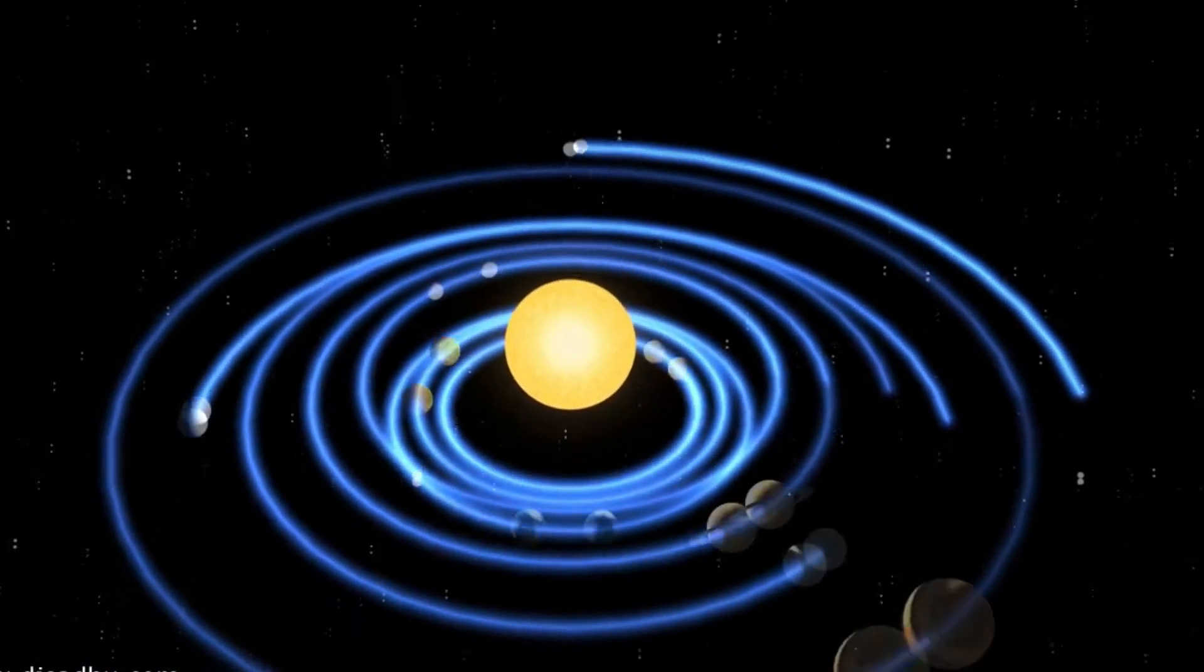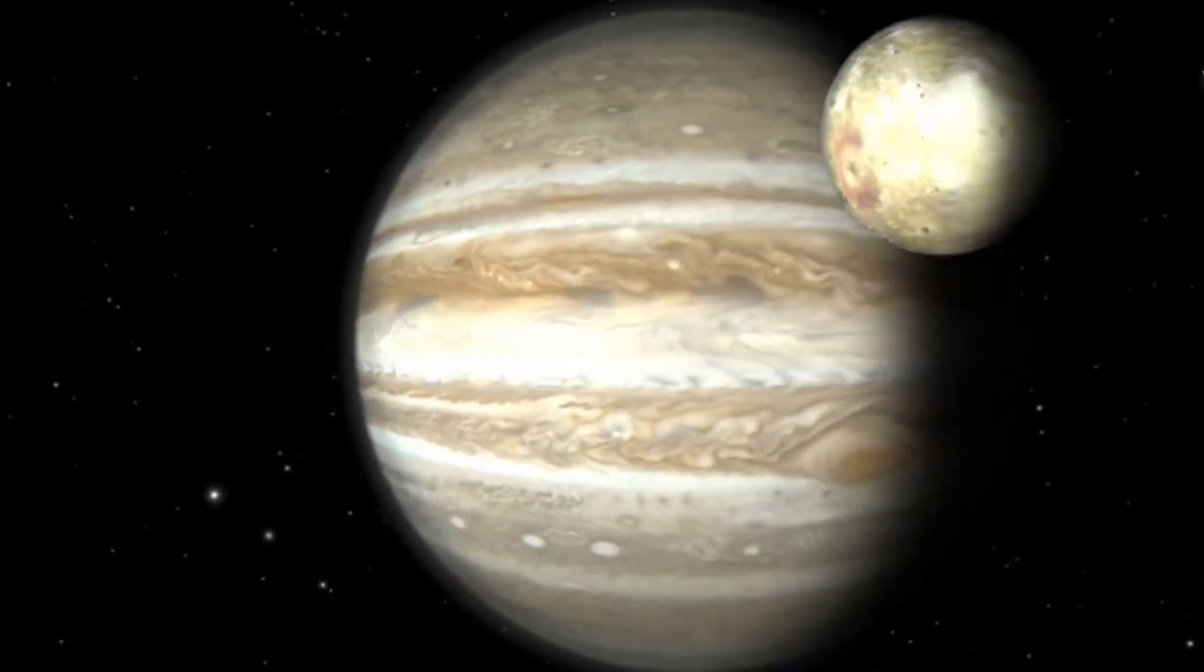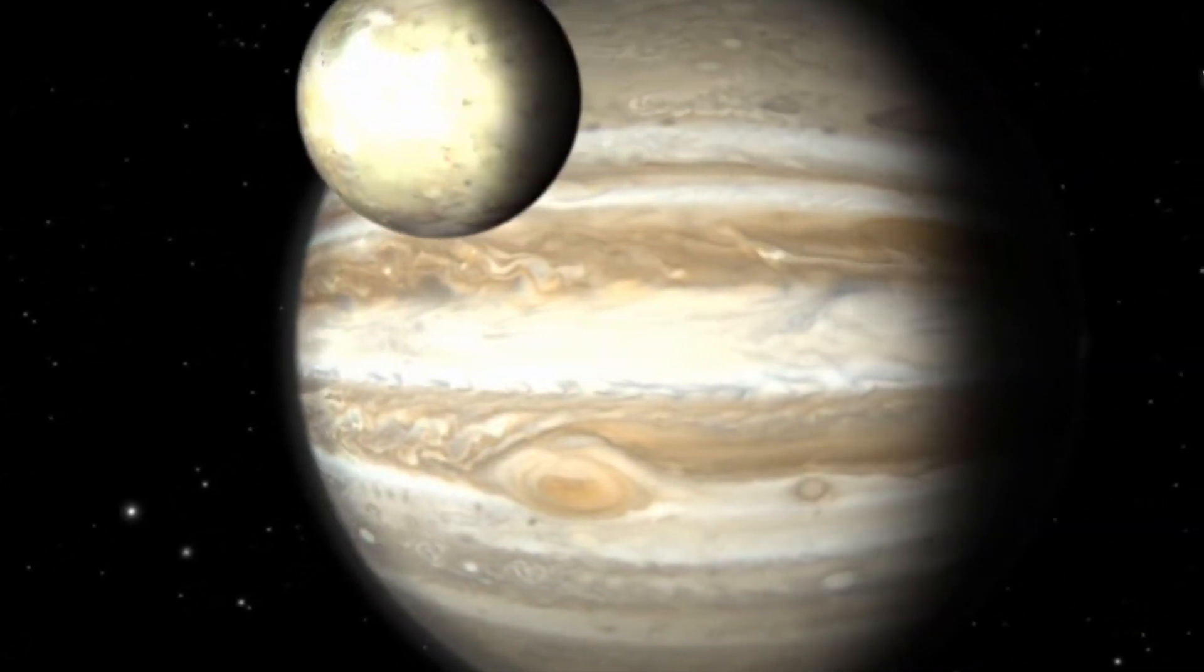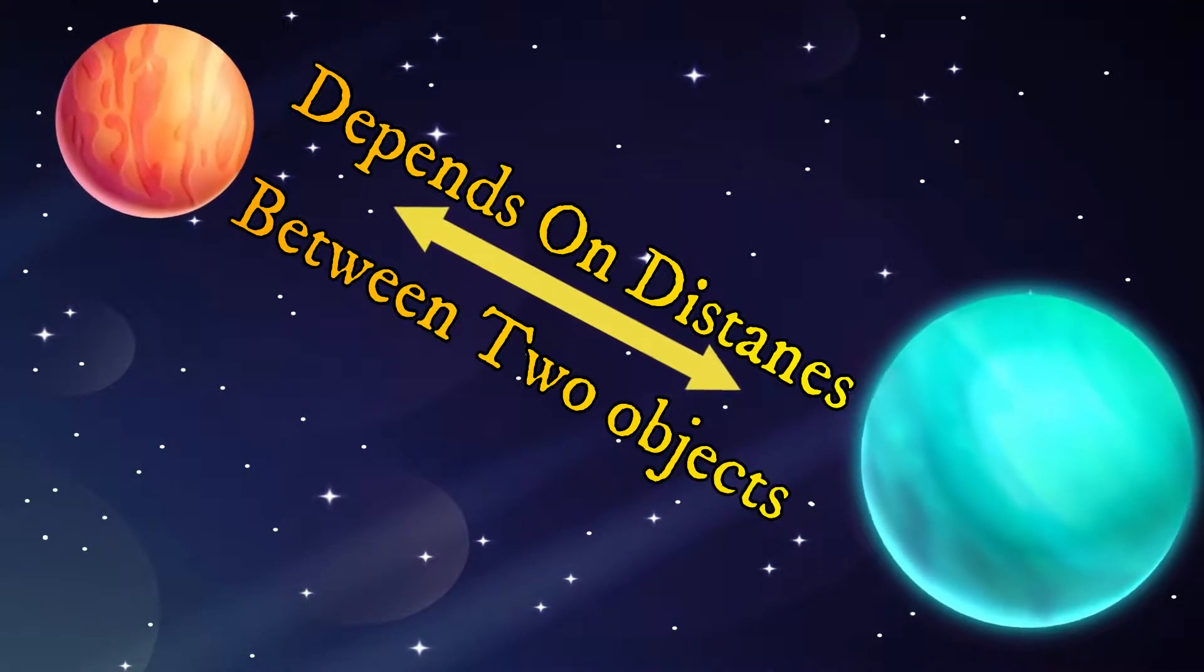most objects in the solar system are held together by their own gravity. Every object is a satellite to some more massive object. The force between two objects depends on the distance between them.